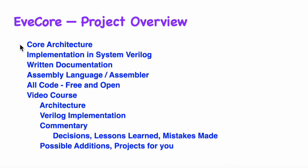The full architecture is implemented in System Verilog and this is tested and running on a small FPGA. Some of the videos include demonstrations where we run the FPGA on small example EVE Core assembly programs. The website includes a bunch of documentation — both formal specification material as well as overview material. There is an EVE Core assembly language and the website includes an assembler written in C that you can download and compile in order to assemble your own EVE Core programs. Everything on the website is free and open so you're welcome to use it however you want.